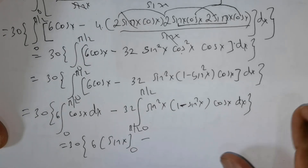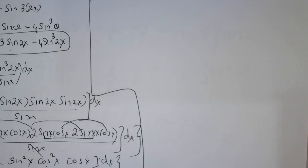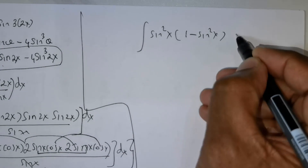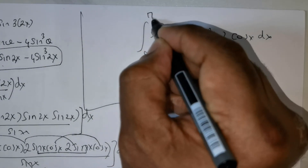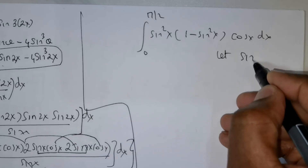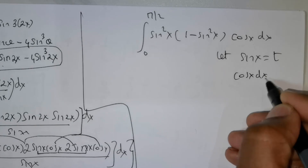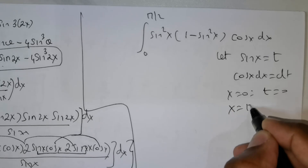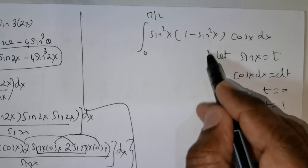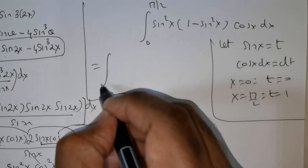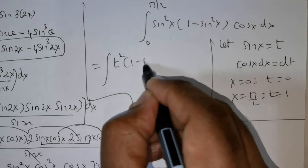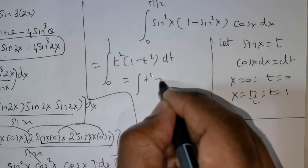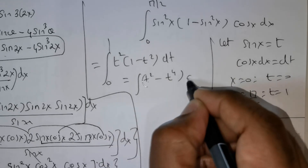Now I would like to show you the integration of sin squared x times (1 minus sin squared x) times cos x dx, with limits 0 to pi over 2. Let sin x equal t, so cos x dx equals dt. When x equals 0, t equals 0; when x equals pi over 2, t equals 1. This gives integral from 0 to 1 of t squared times (1 minus t squared) dt, which equals integral of t squared minus t to the power 4, times dt.